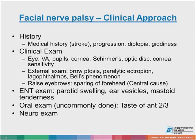We also ask the patient to raise the eyebrows. If there is sparing of the forehead, alarm bells must ring, as it may indicate a central cause. We must also refer to ENT or perform a simple ENT exam, including looking for parotid swelling and ear vesicles, and check for mastoid tenderness. Oral examination is uncommonly done, but you can check the taste of the anterior two-thirds of the tongue. A full neuroexamination is also indicated.